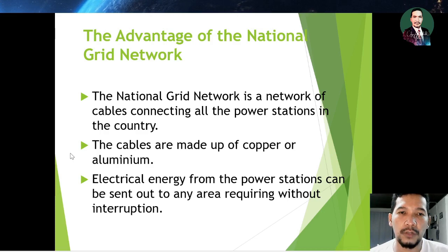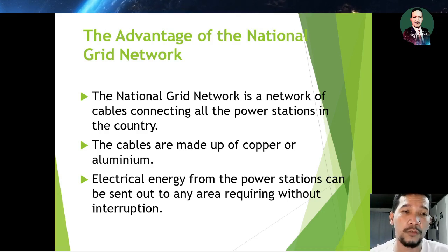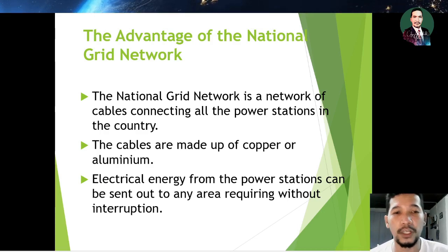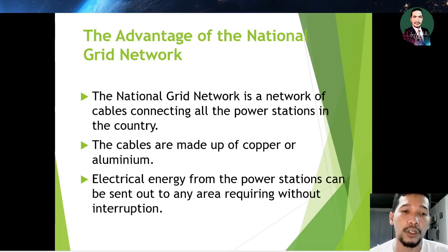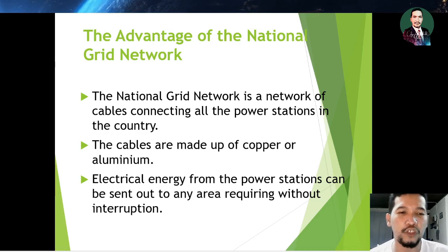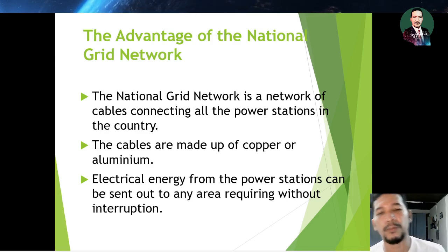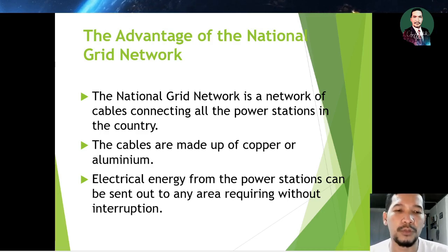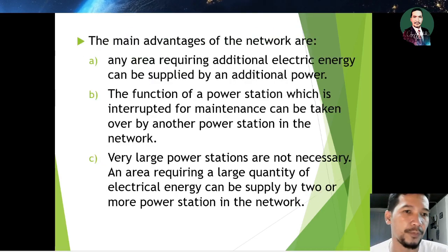The national grid network is a network of cables connecting all the power stations in the country. The cables are made of copper or aluminium. Electrical energy from the power stations can be sent to any area requiring it without interruption.